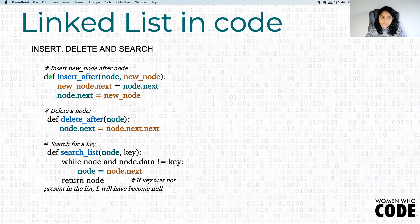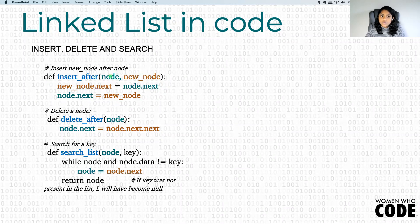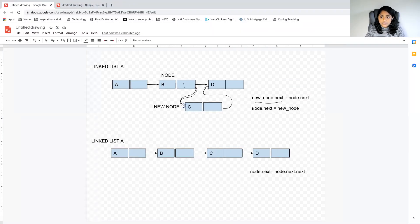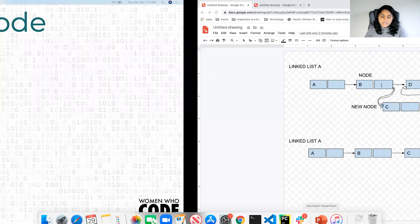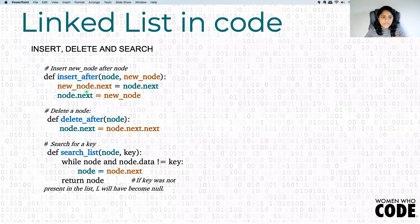So that's the insert after function. I have a 'def' keyword to define my function and 'insert_after' is the name. It takes the node — which is B in the diagram — and the new_node, which is C. To insert the new node after this node, I set new_node.next to whatever node.next was, and then set node.next to new_node. That's the same two lines of code we discussed — that's the insert after function.